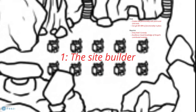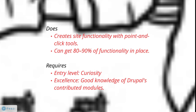Role number one is called the Site Builder. If you meet someone at the conference who says they're a site builder, it means this person creates Drupal site functionality with point-and-click tools — someone who knows how to download modules, install them on a Drupal site, and make useful things happen. Site building with point and click can get 80 to 90 percent of functionality in place. The entry-level skill required is curiosity. To become really good, you need solid knowledge of Drupal's contributed modules.